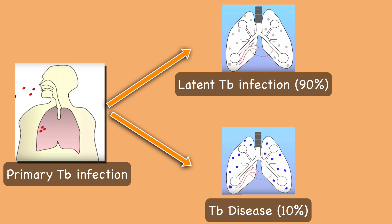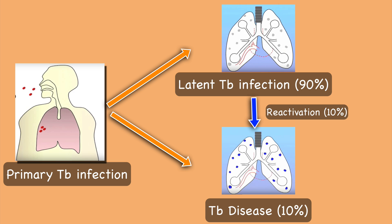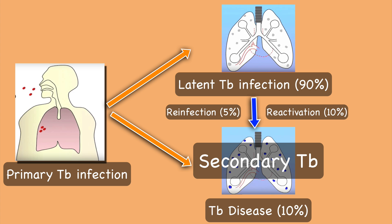Persons who have tuberculosis disease are usually infectious and may spread the bacteria to other people. In a person with latent tuberculosis infection, there is a 10% lifetime risk of reactivation to active disease which can occur at any time. Rarely, exogenous reinfection can also occur that can lead to active tuberculosis disease. This is called post-primary or secondary tuberculosis.